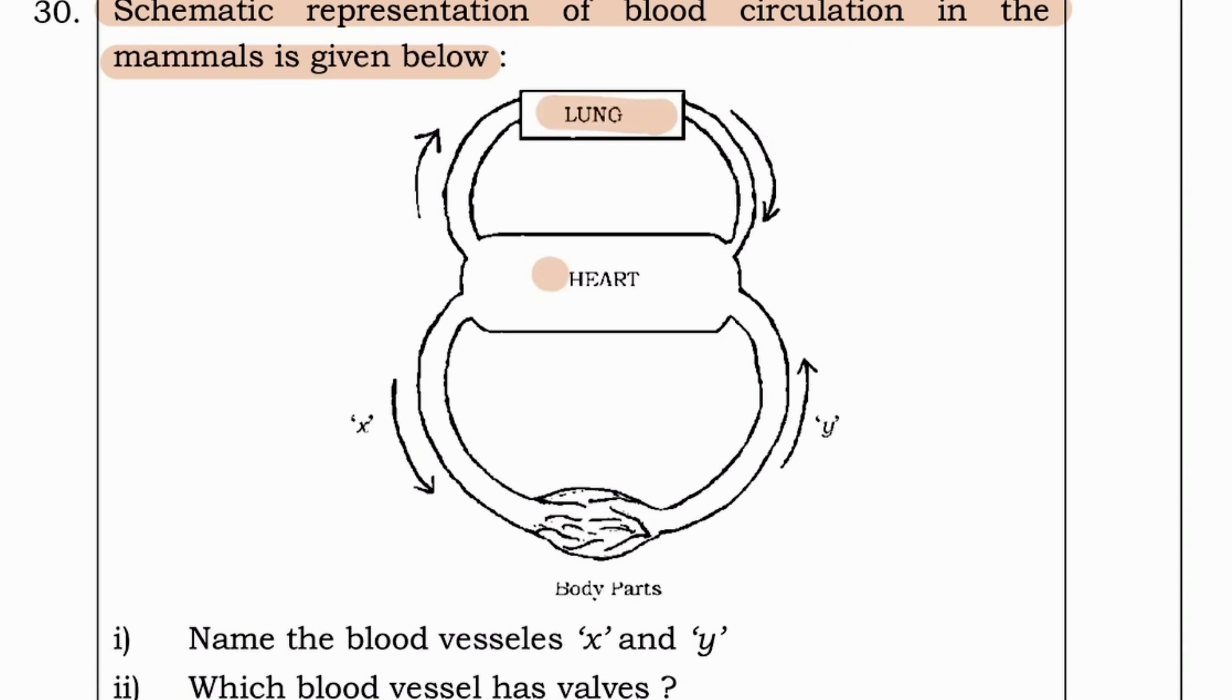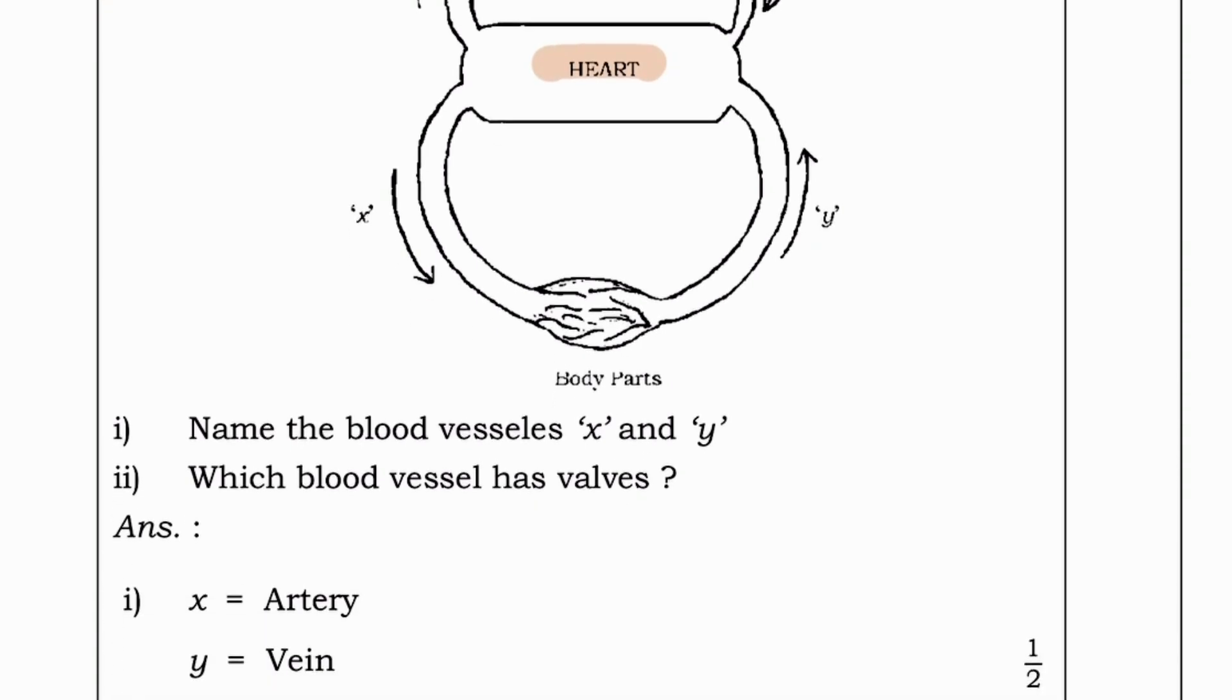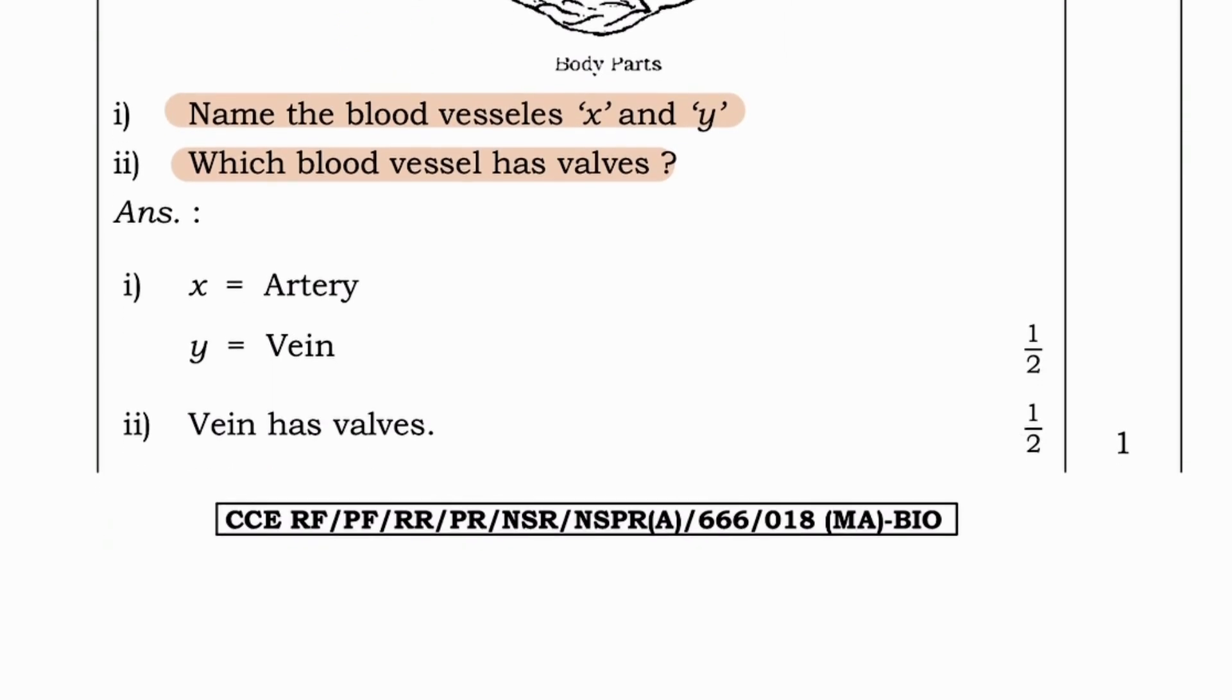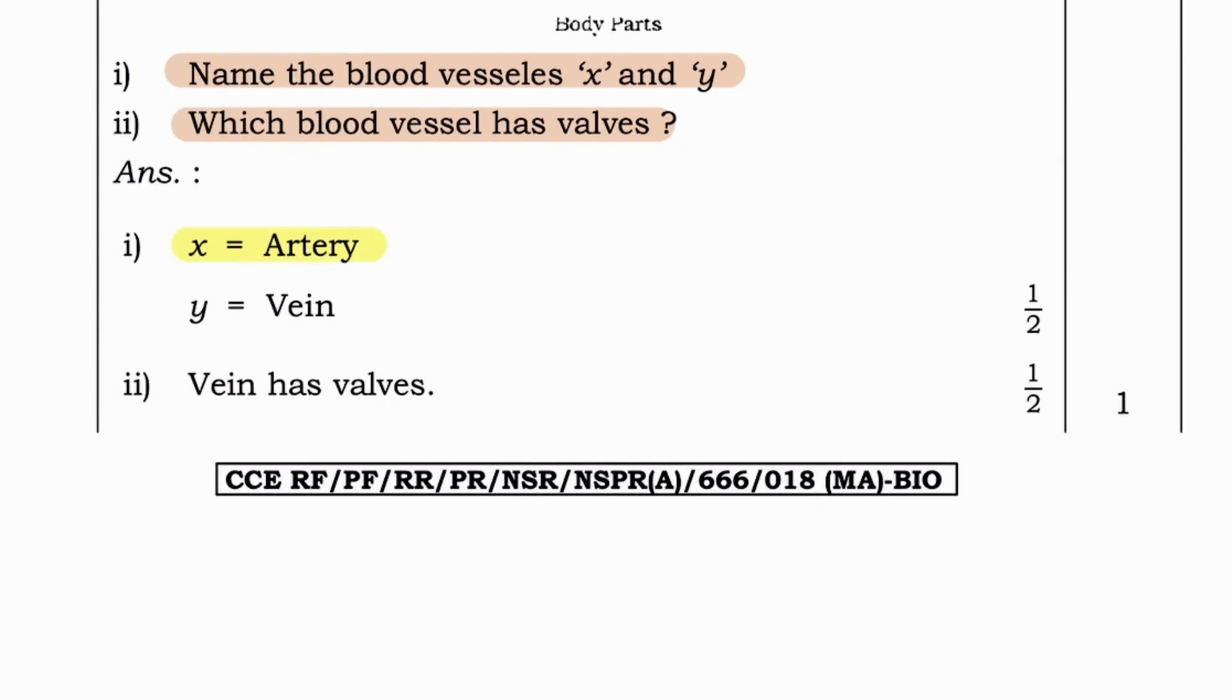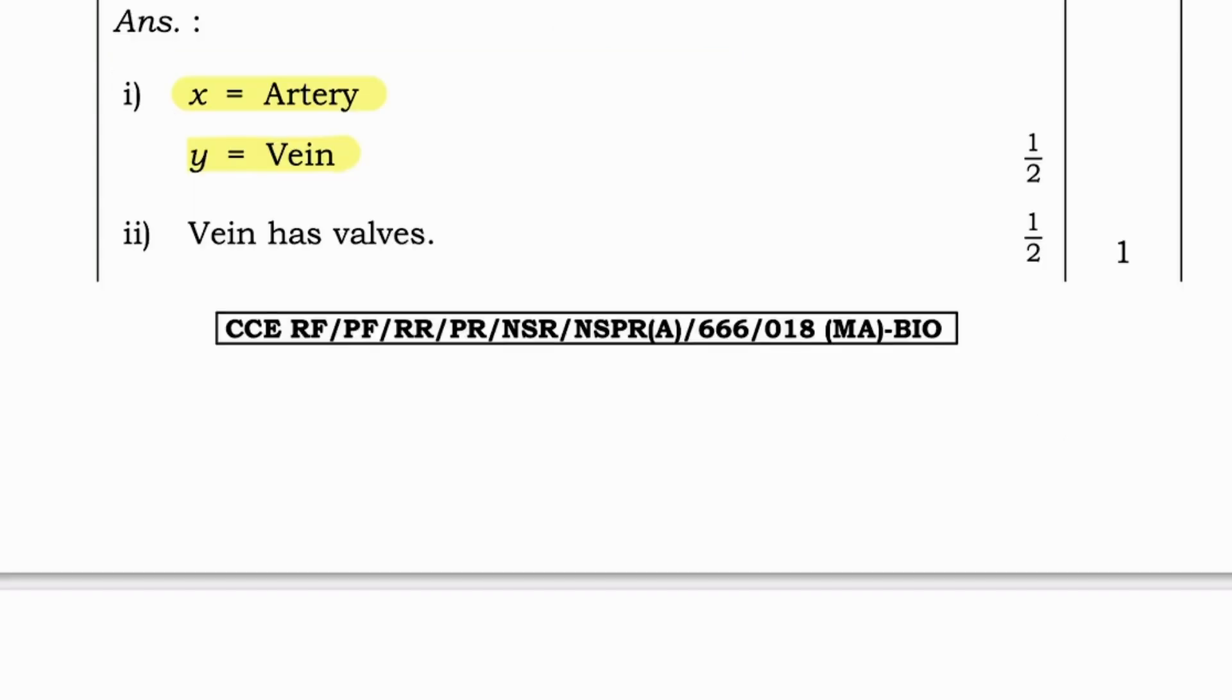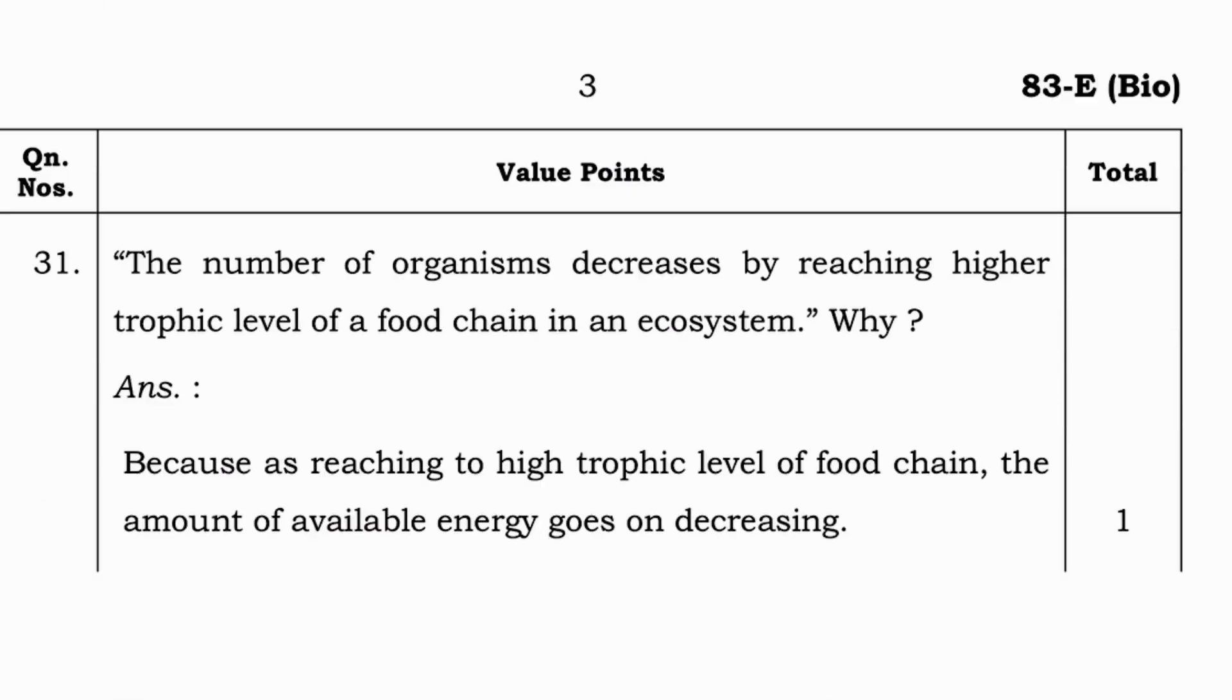Next question. Schematic representation of blood circulation in the mammals is given below. Lung, heart. First question. Name the blood vessels X and Y. And which blood vessels have valves? Answer is X is artery and Y is vein. And vein has valves.